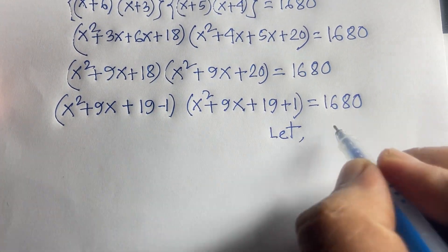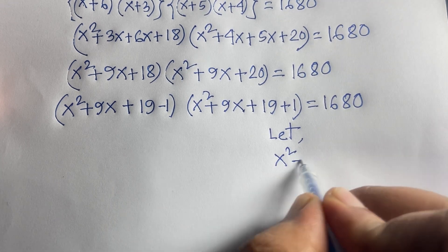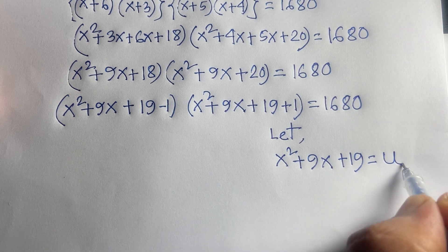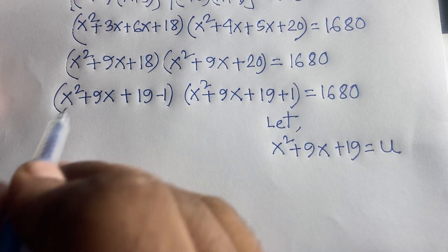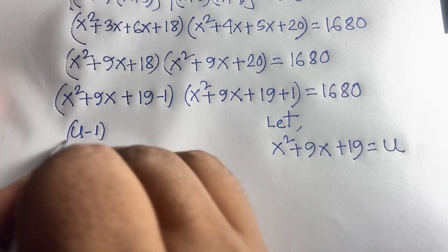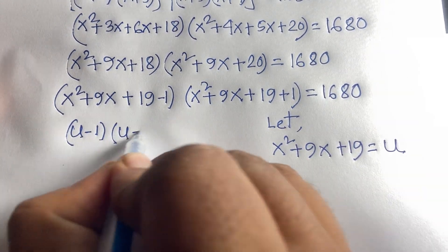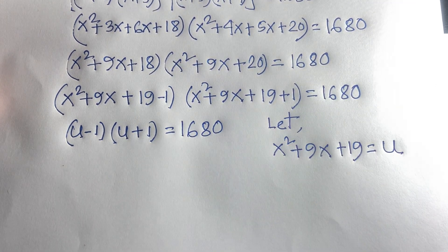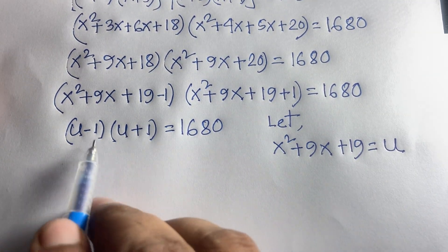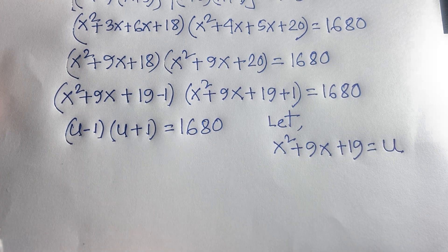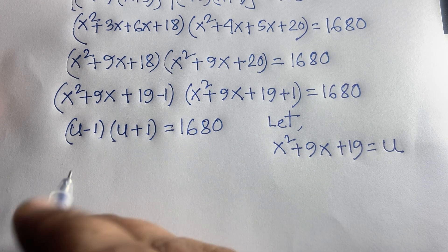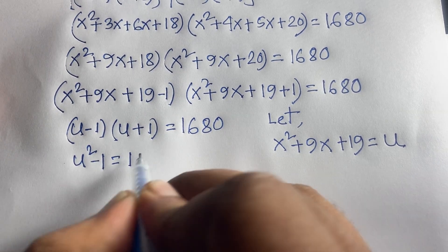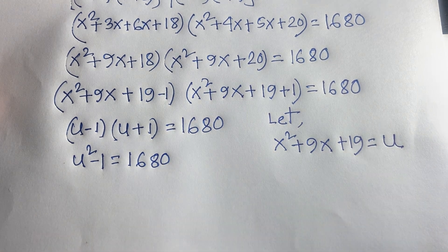Let u = x²+9x+19. The equation becomes (u-1)(u+1) = 1680. Using the difference of squares identity (a+b)(a-b) = a²-b², this simplifies to u² - 1 = 1680.